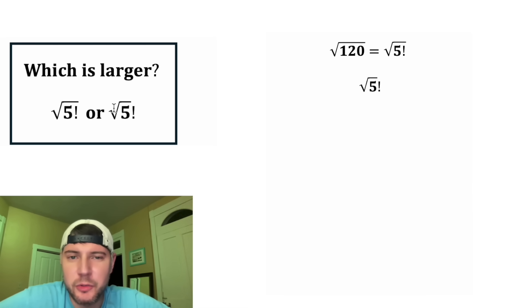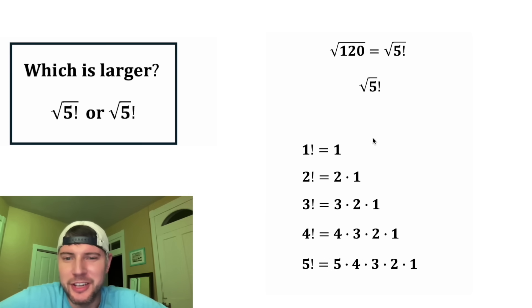Next, let's look at the quantity square root of 5 factorial. Once again, here's all the different factorials. And 1 factorial is equal to 1, and 2 factorial is equal to 2, 3 factorial is equal to 6, 4 factorial is equal to 24, and 5 factorial is equal to 120.